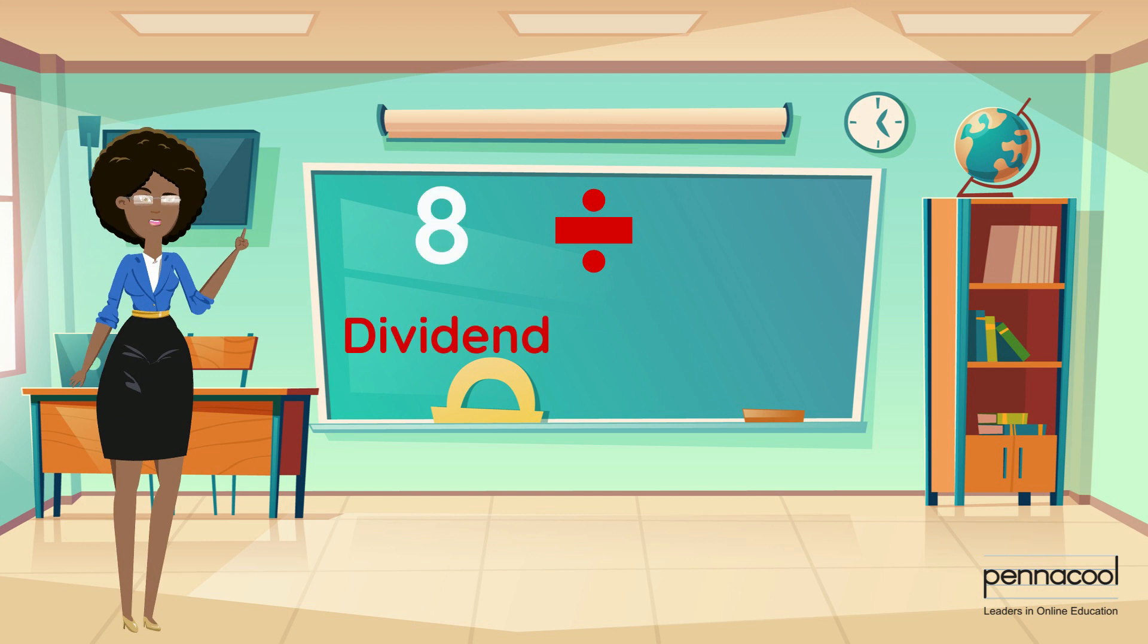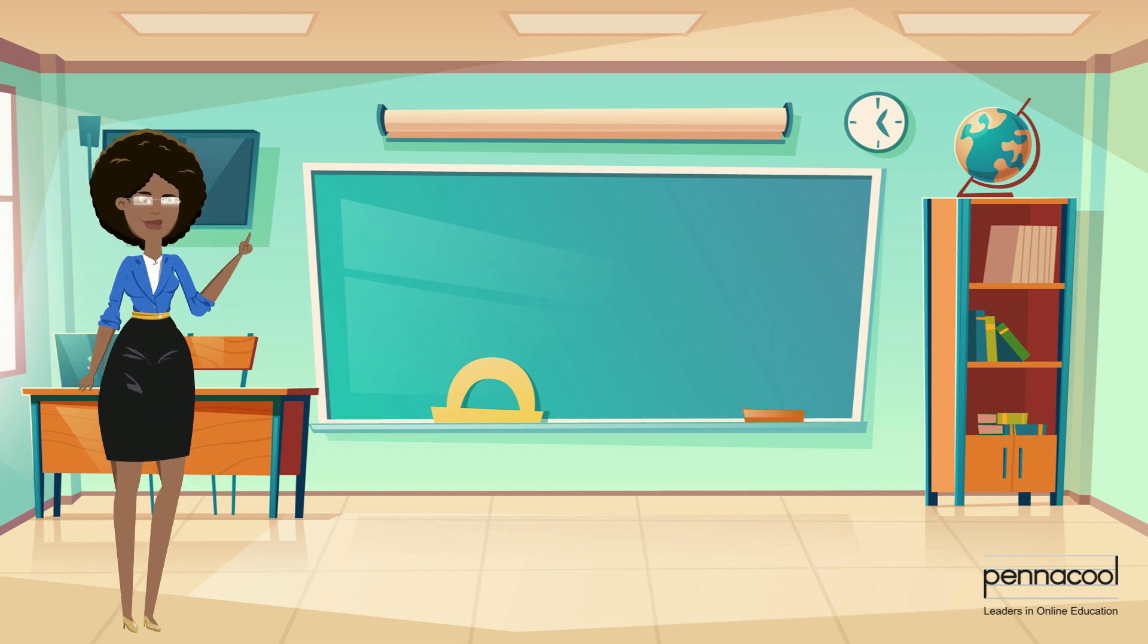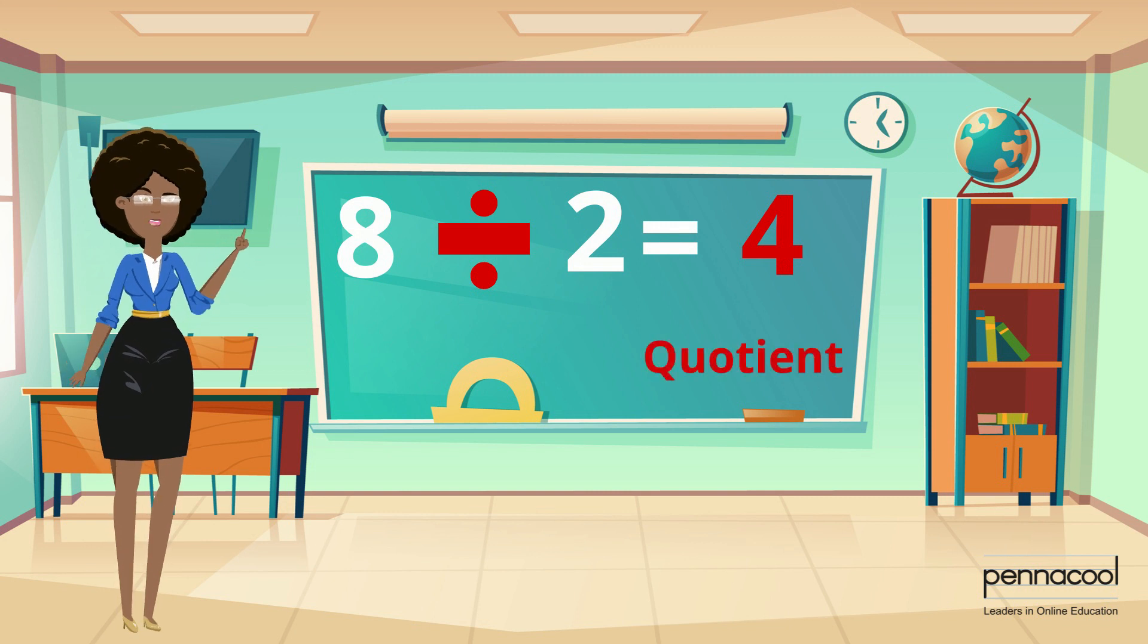In division, there is a dividend, which is a number being divided, and the divisor, which is a number that the dividend is being divided by. The result of the division question is the quotient.